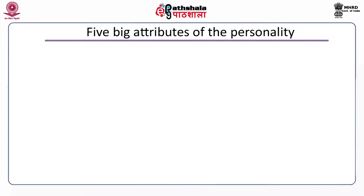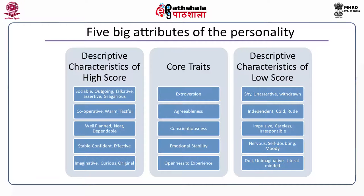The Big Five attributes of personality: there is a table showing descriptive characteristics of high scores, core traits, and descriptive characteristics of low scores. High score characteristics include: sociable, outgoing, talkative, assertive, gregarious; cooperative, warm, tactful, well-planned, neat and dependable; stable, confident and effective; imaginative, curious and original. The five core traits (cold traits) are: extroversion, agreeableness, conscientiousness, emotional stability, and openness to experience.